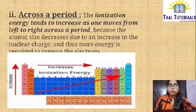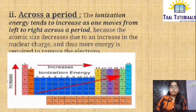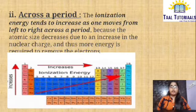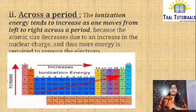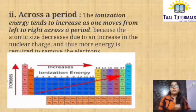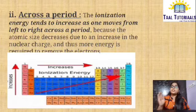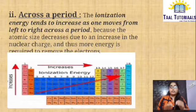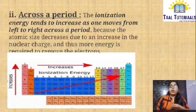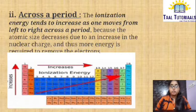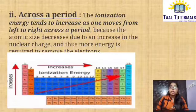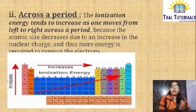Across a period, moving from left to right, the ionization energy tends to increase. Because the atomic size is decreasing due to an increase in nuclear charge, more energy is required to remove the electron. So there is an ionization energy increasing from left to right — that is, across a period.